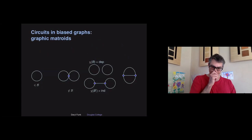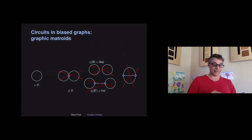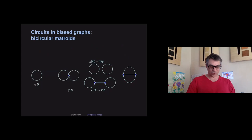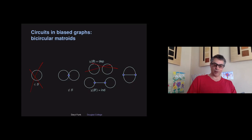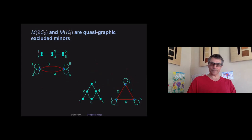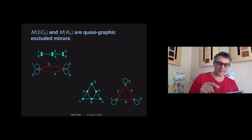Graphic matroids are quasi-graphic matroids that have every single cycle as a circuit of the matroid. Bicircular matroids are the quasi-graphic matroids that have no cycles that are circuits and no bracelets that are circuits — as tight as possible versus as free as possible in the bicircular case. So here are some excluded minors. We can practice understanding these notions of bias graphs and bracelet functions by looking at some bias graphs.